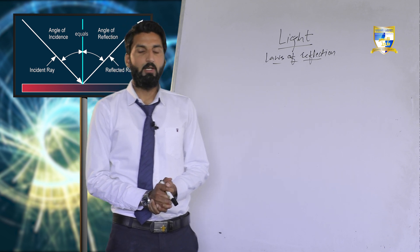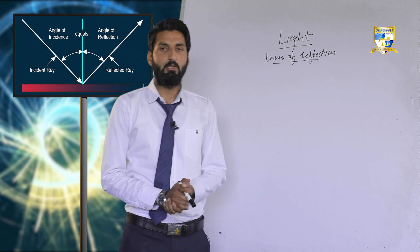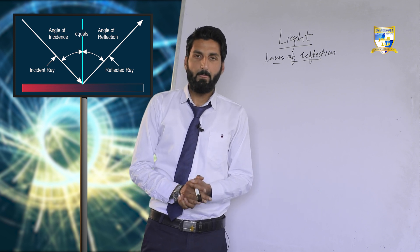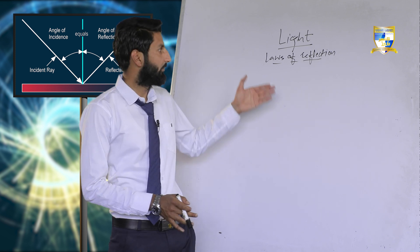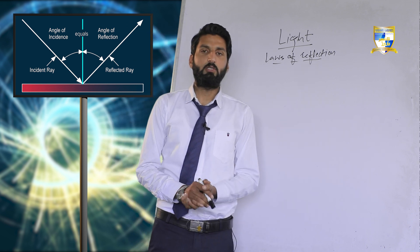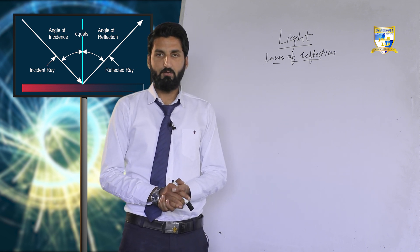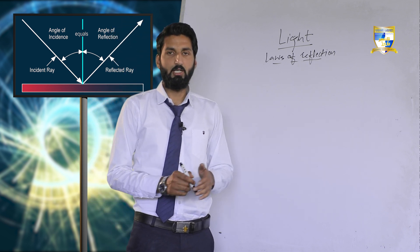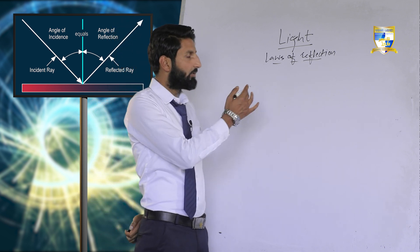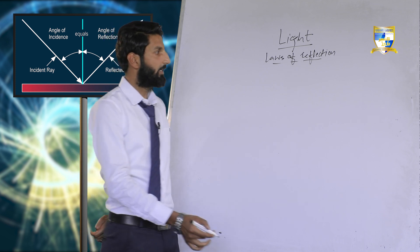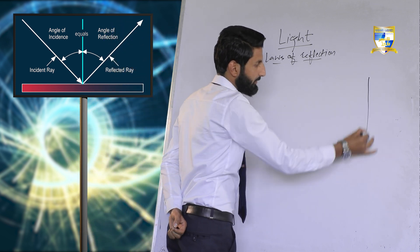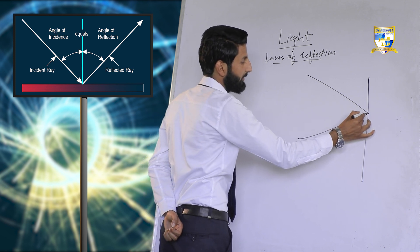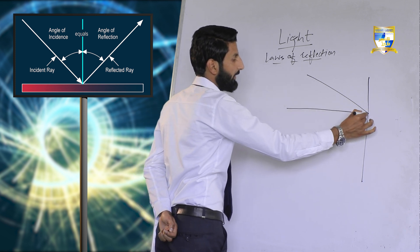Assalamu Alaikum students. In the last lecture we discussed light and the phenomena of reflection of light. Now in this lecture we are going to discuss the laws of reflection of light, about which I already have introduced the diagram. The laws of reflection involve a plane surface, an incident ray, a reflected ray, and a normal.